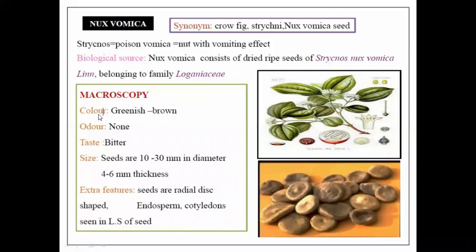Coming to the macroscopy: the color is greenish brown, as you can see here when it is fresh. Odor is none and the taste is bitter. Size is 10 to 30 mm in diameter and 4 to 6 mm in thickness. The extra feature of the seeds is that they are radially disc-shaped. As you can see in the image, endosperm, cotyledons are seen in the longitudinal section of the seeds of Nux vomica.